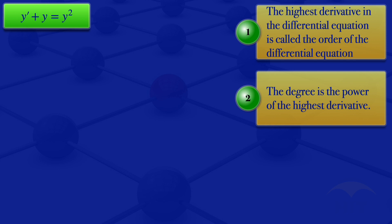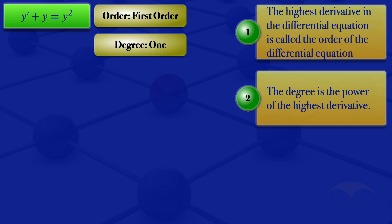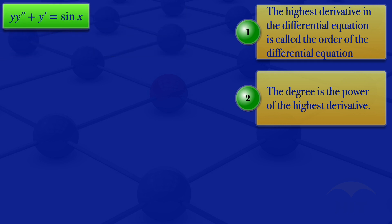Looking at the first equation, the highest derivative we have is the first derivative, so the order of that differential equation is first order. Looking at the degree, we check the power of the highest derivative — it is raised to a power of 1, so its degree is 1.